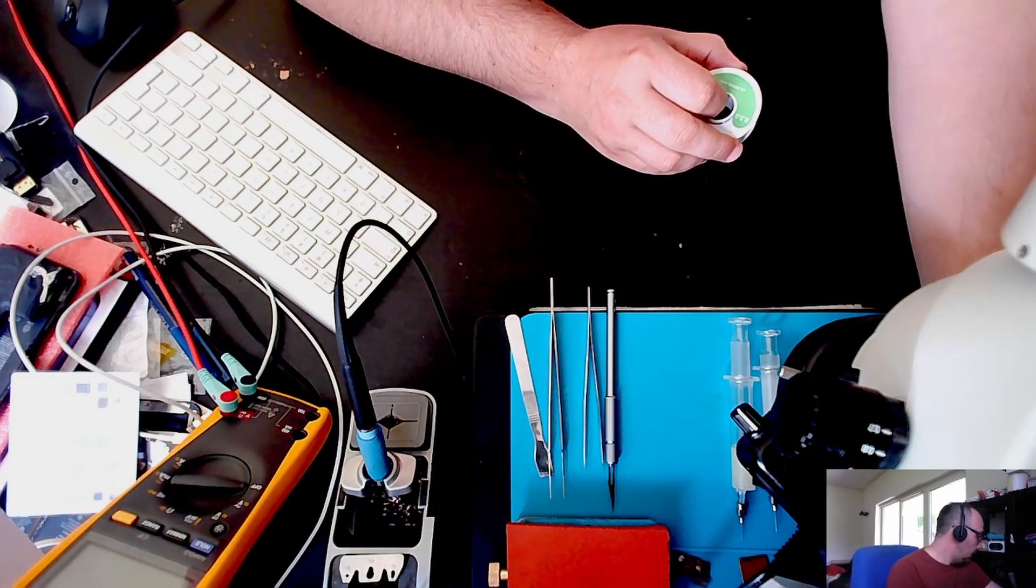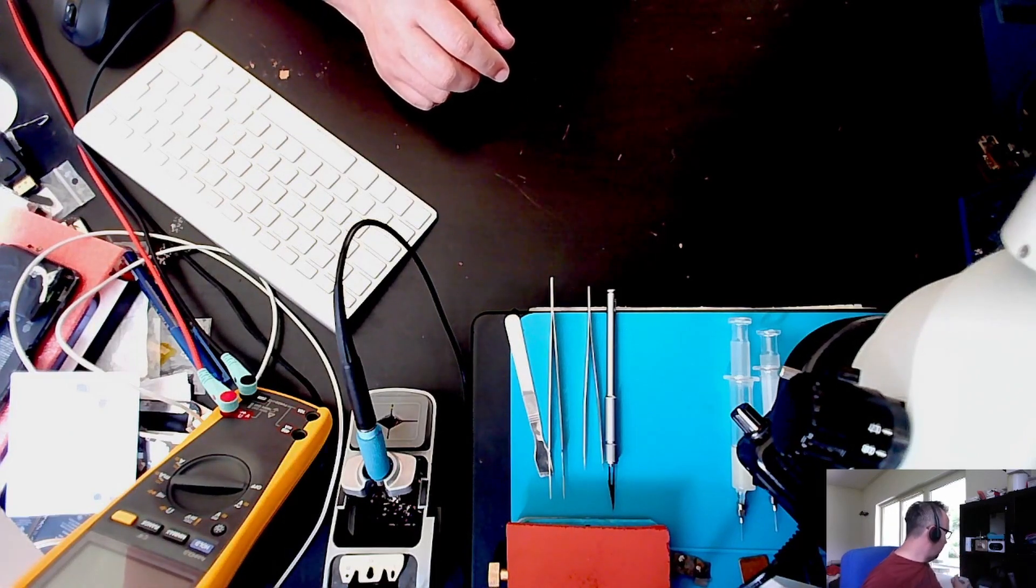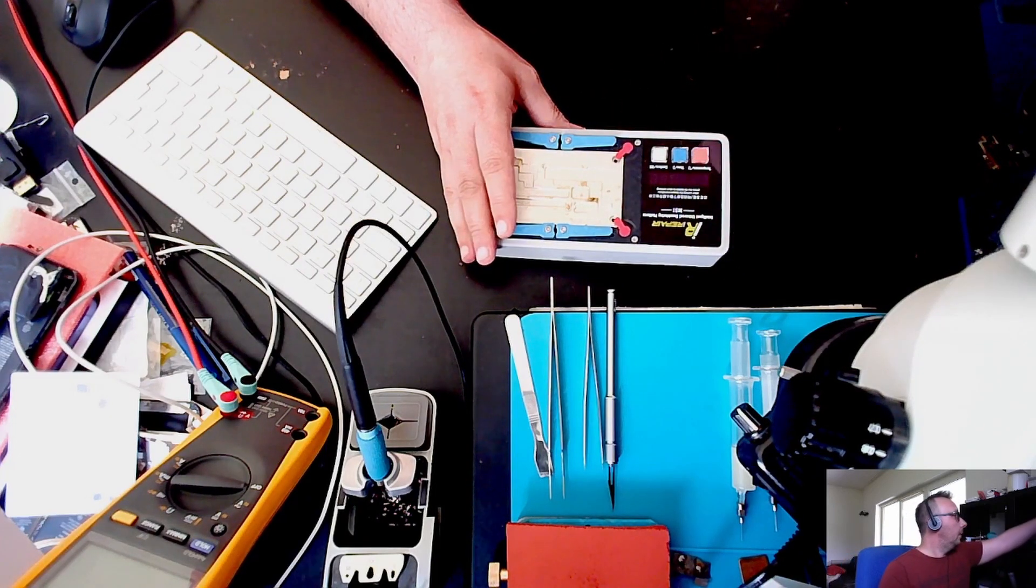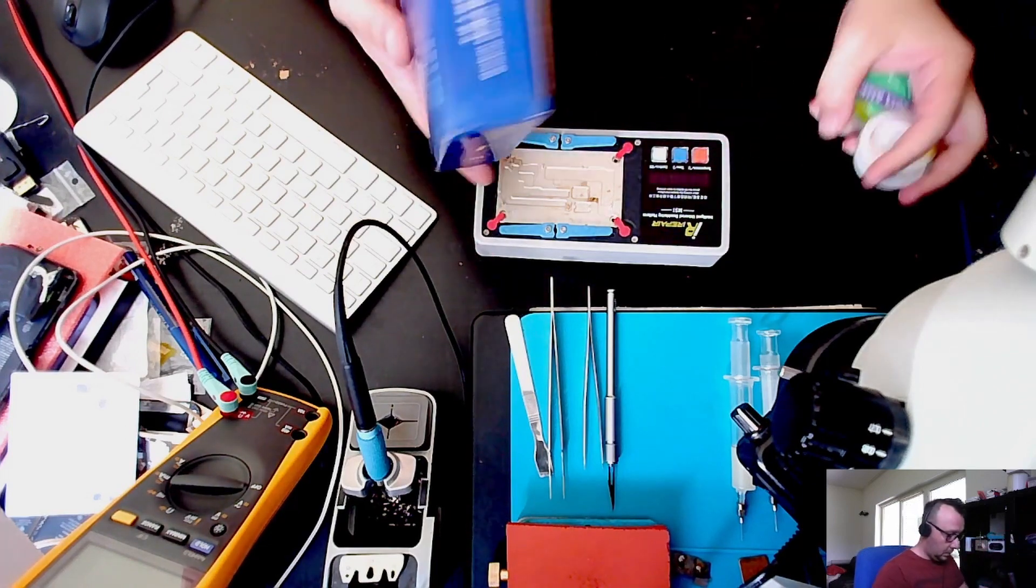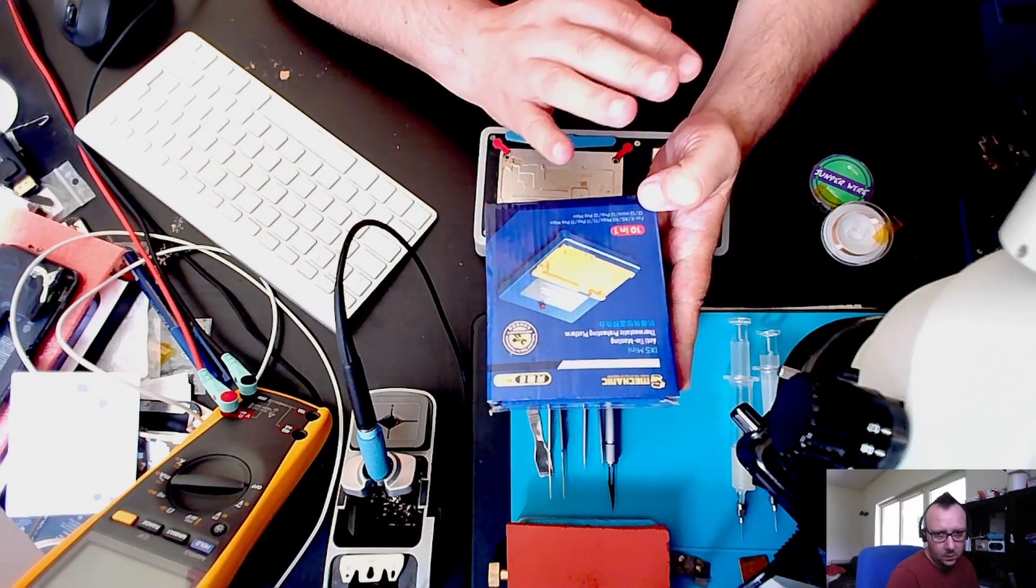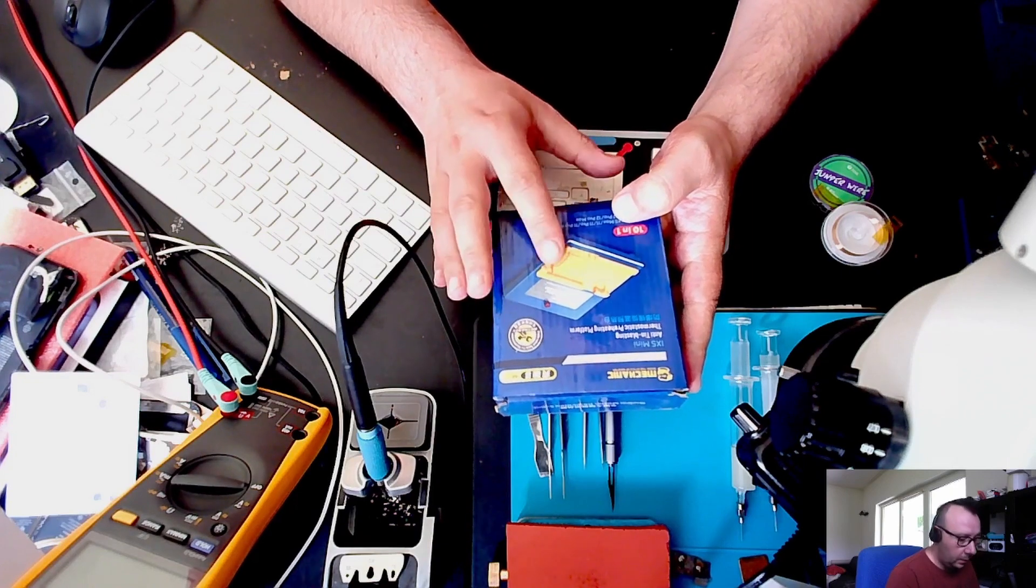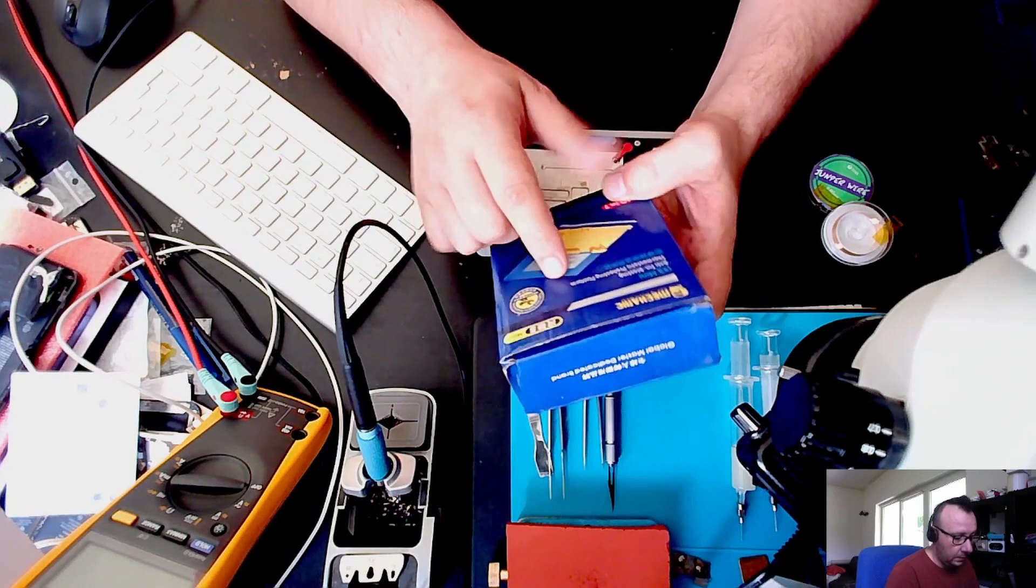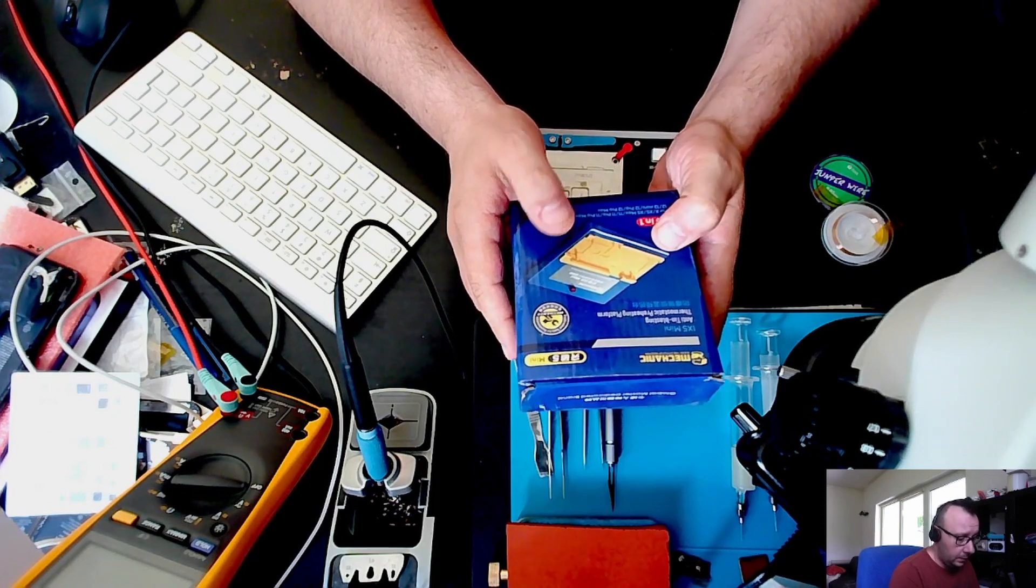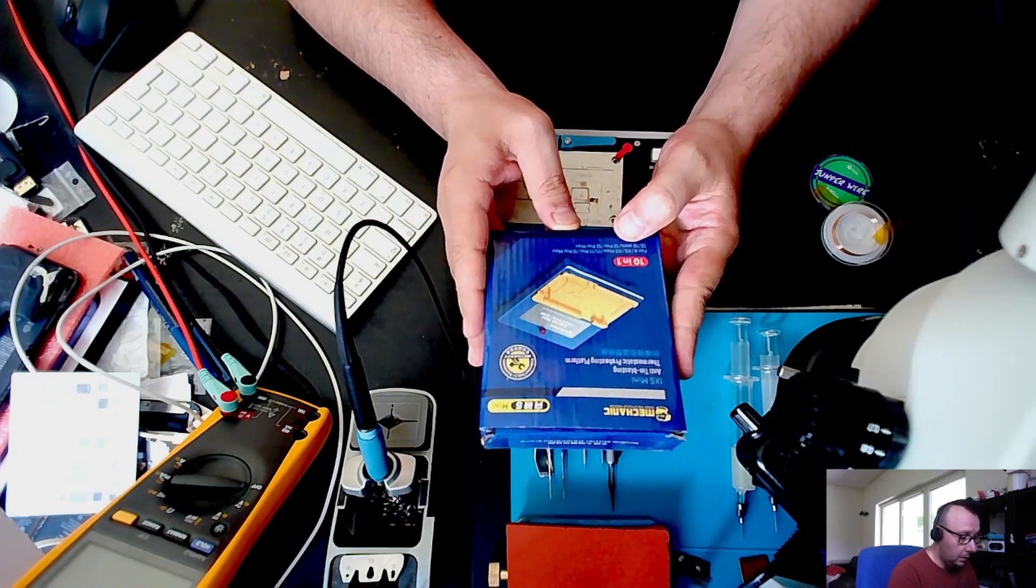Again, about soldering. As I mentioned about soldering the boards together and desoldering them, you need a hot plate for that. I first started with a Mechanic iX5 Mini. This is a universal one. It works from X to 12 Pro Max. I used it for 14 too. I found a way to fit them there. You can set it up for low melt or high melt solder. It has a button. When you set it to high melt, it's gonna heat up to 220 degrees. Otherwise, it's gonna stay at 170. This was a very good one. I used it a lot of time.